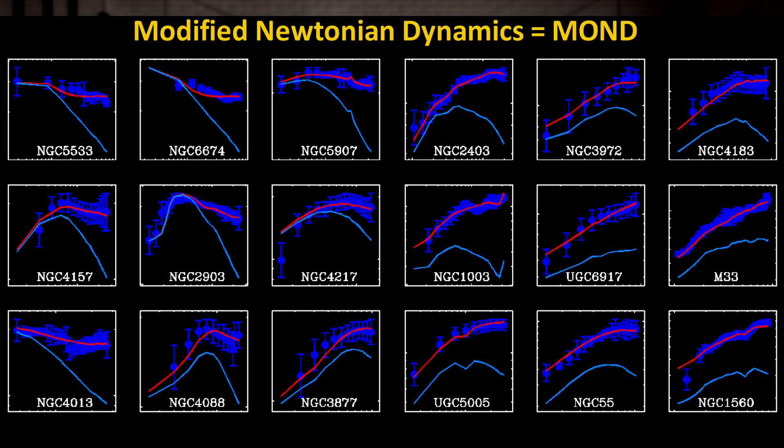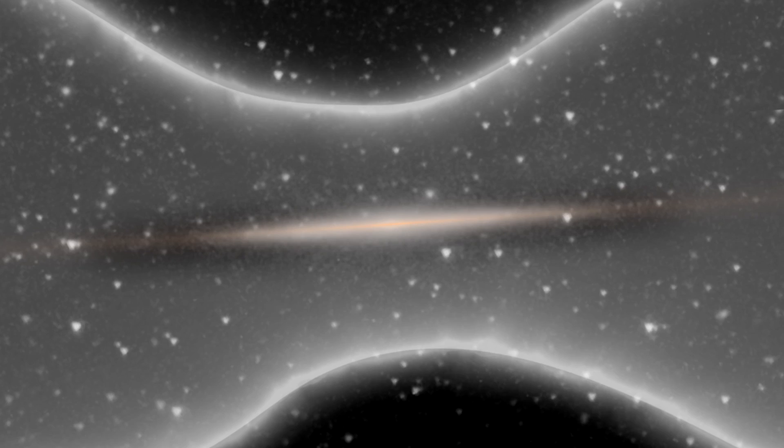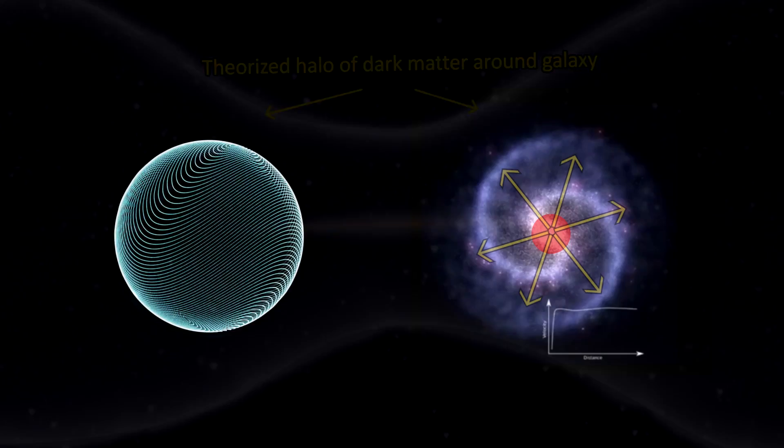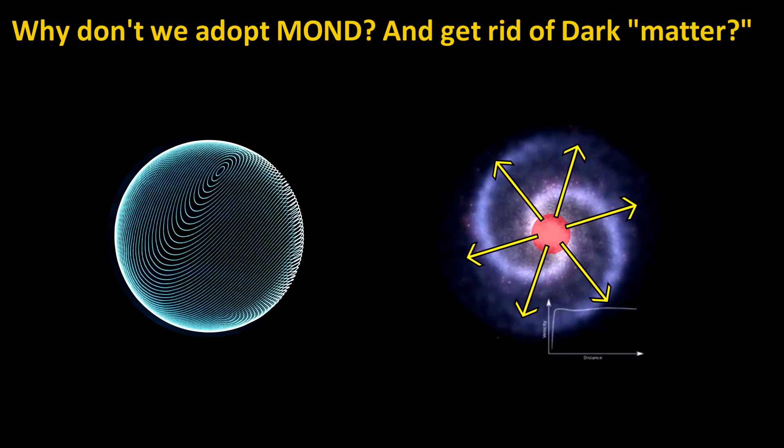Both the idea of MOND and the theory of a dark matter halo surrounding galaxy seems to work equally well. But since we haven't detected dark matter in decades of looking for it, why don't we just adopt Milgram's hypothesis as a new scientific theory, and get rid of the idea of dark matter as a particle altogether? Is there any problem with Milgram's theory? Well, it turns out there is.